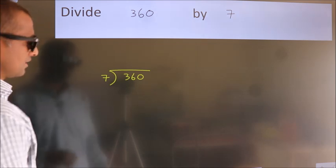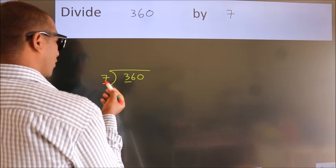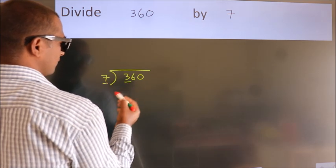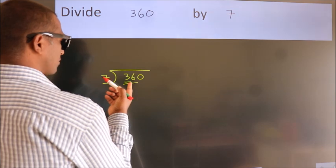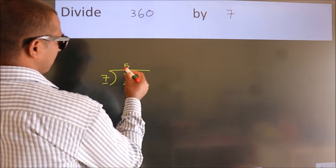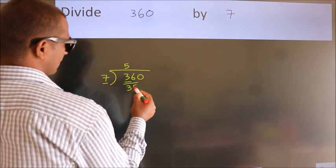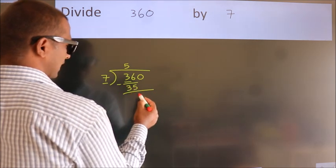Next. Here we have 3. Here 7. 3 smaller than 7. So, we should take 2 numbers: 36. A number close to 36 in 7 table is 7 fives 35. Now, we should subtract. We get 1.